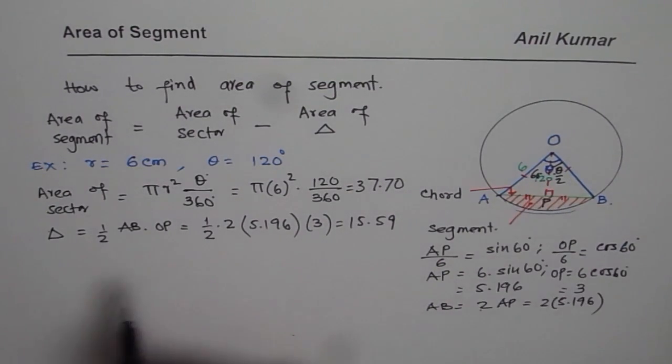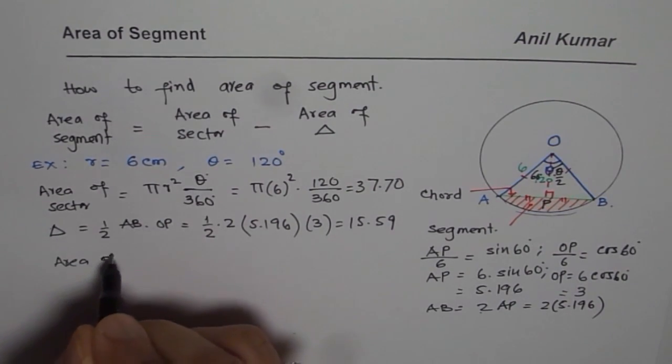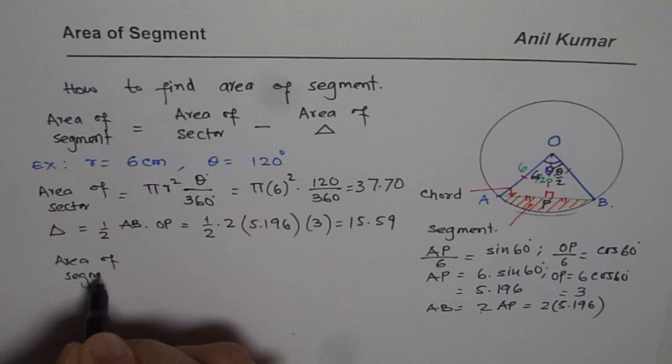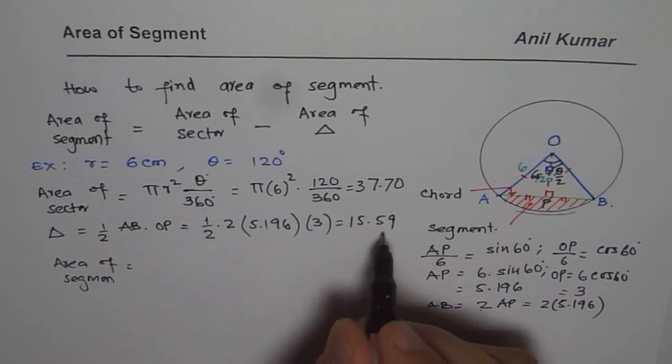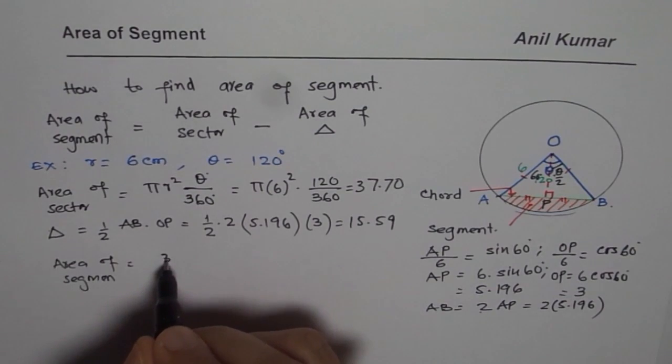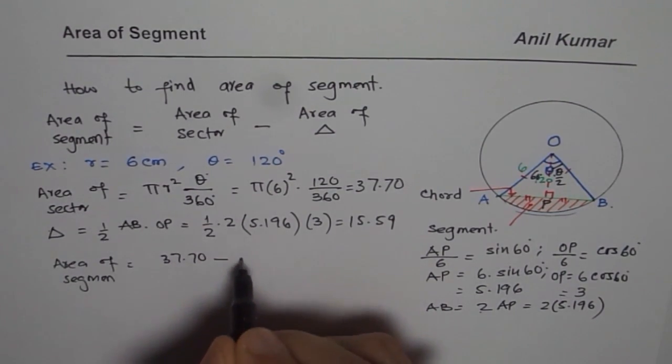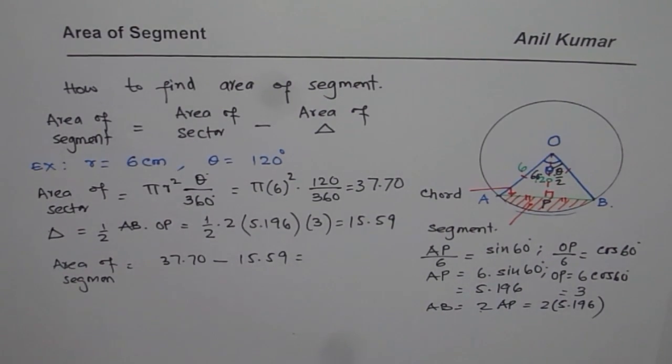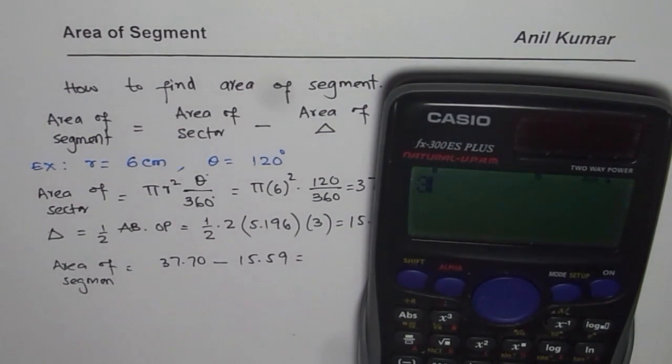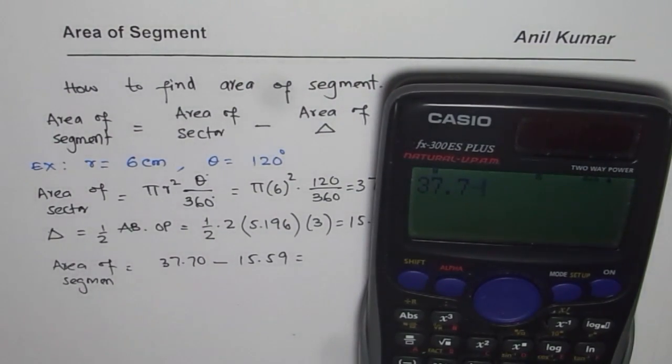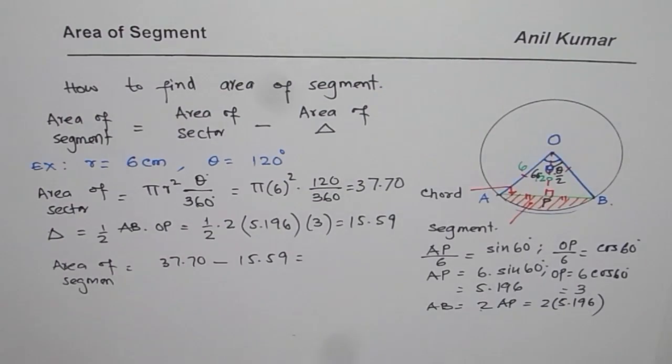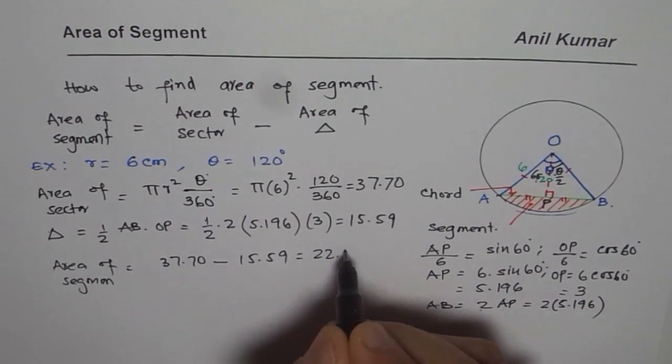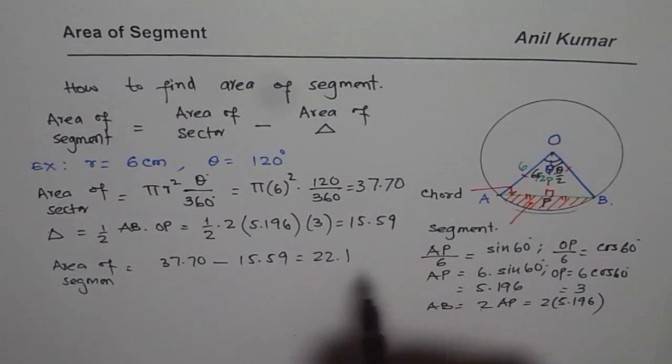And now we can find area of segment. So area of segment is difference of sector and triangle area. So sector area is 37.70, take away 15.59 and that gives us the answer. We have 37.7 take away 15.59. We will round it to one decimal place. 22.1. So we get 22.1. Since centimeters, we will write this in centimeters square.